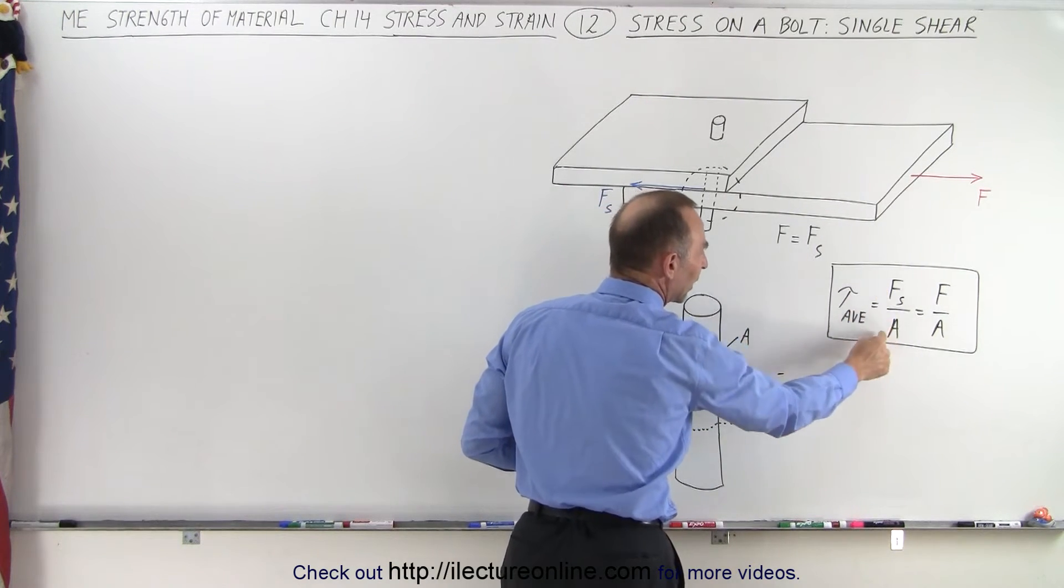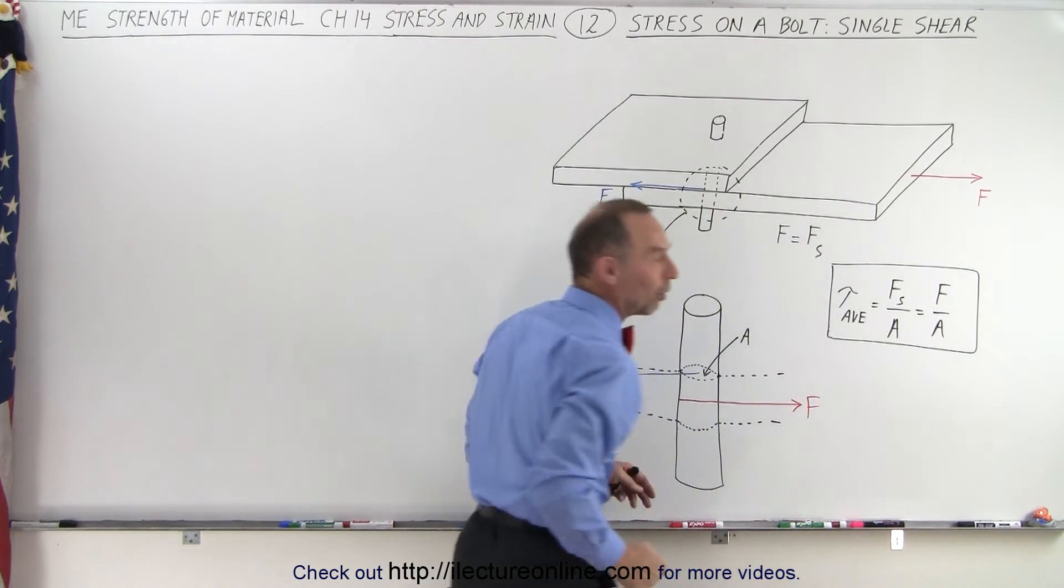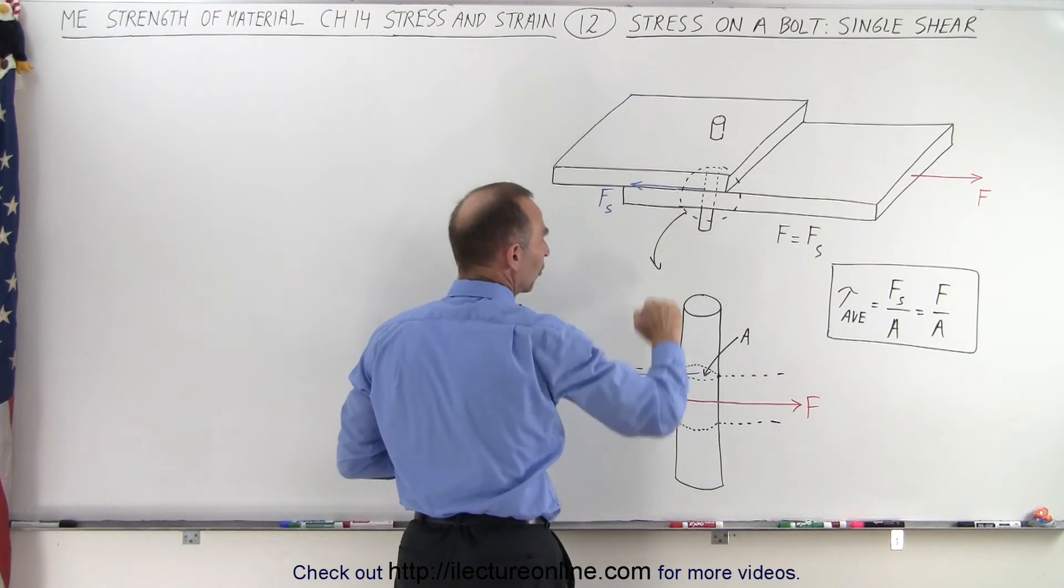Which is equal to the force applied divided by the cross-section of the bolt. In other words, in this case, the amount of shear force on the bolt is exactly the same as the amount of force applied to the board.